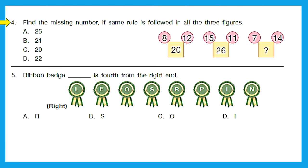Question 4: find the missing number if the same rule is followed in all three figures. The first figure has 8, 12, and 20 — it looks like 8 and 12 are part of 20. So let's add them: 8 plus 12 equals 20. Yes! Using the same rule: 15 plus 11 equals 26 — it matches. Now applying the same rule to the third figure: 7 plus 14 equals 21.